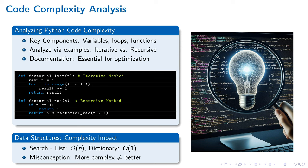Moreover, selecting appropriate data structures greatly influences code's complexity. Searching within a list exemplifies O(n), linear time complexity, as each element might need examination.